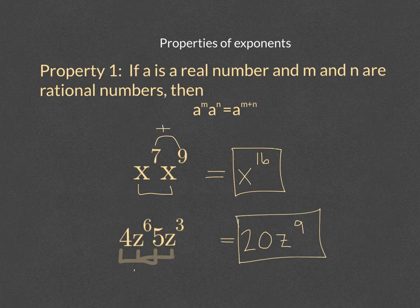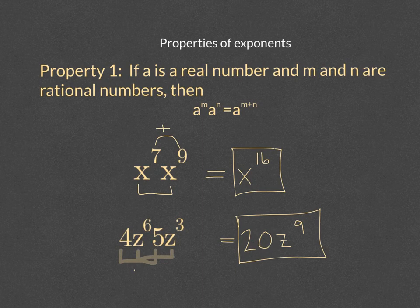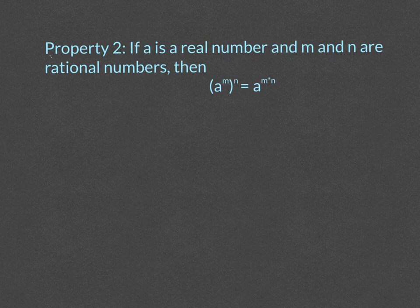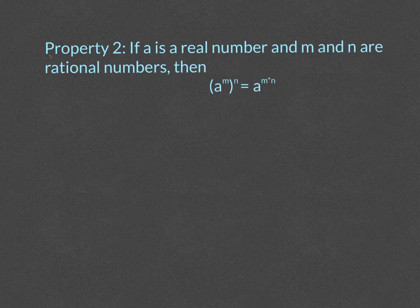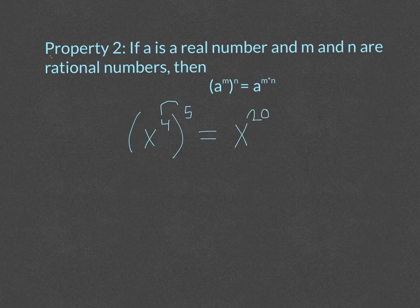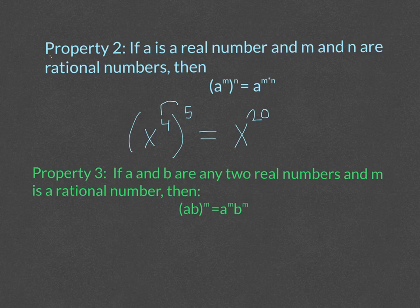That is property one. So now let's take a look at the second property of exponents. The second property says if a is a real number and m and n are rational numbers, then a to the m to the nth power is equal to a to the m times n. So if you have a whole group here, let's look at x to the fourth to the fifth power. In order to figure out what this whole term is equal to simplified, we simply multiply the powers. So that would be x to the twentieth.